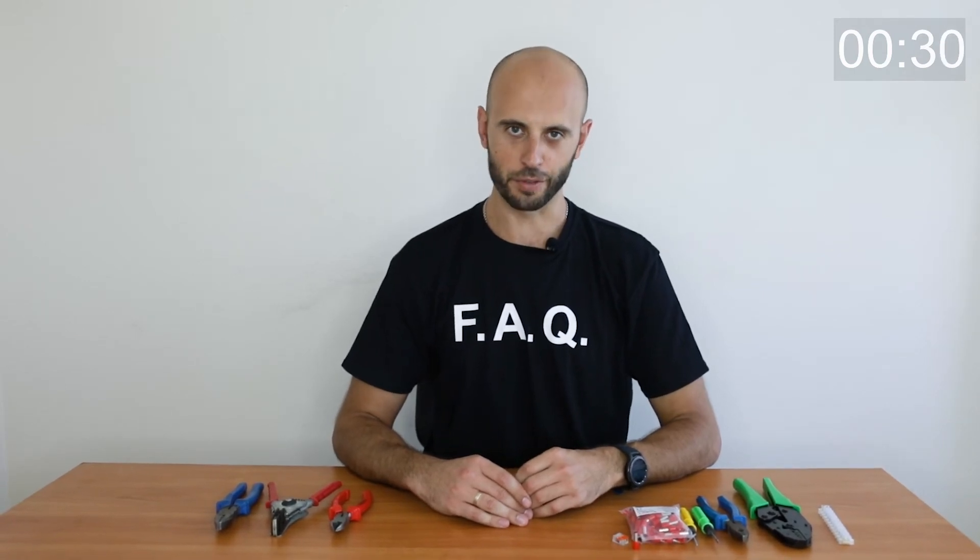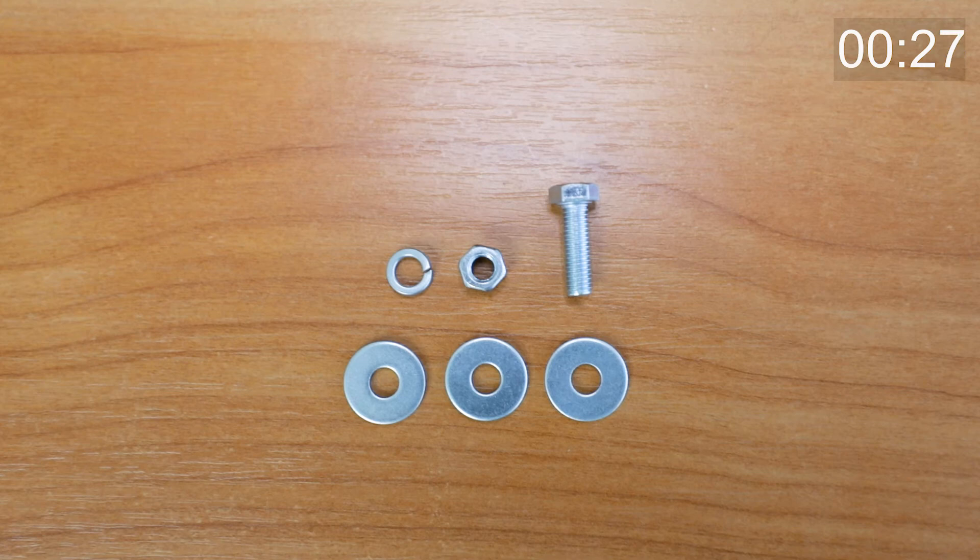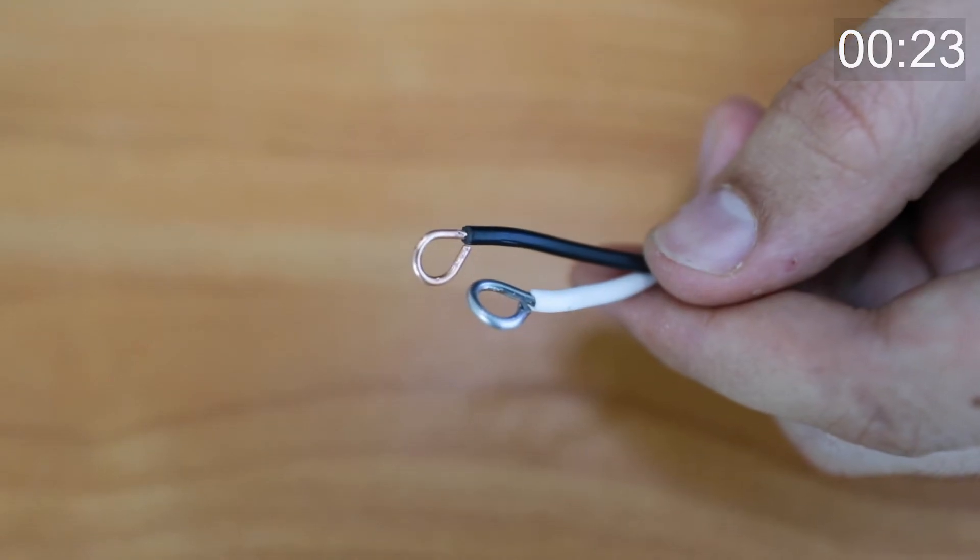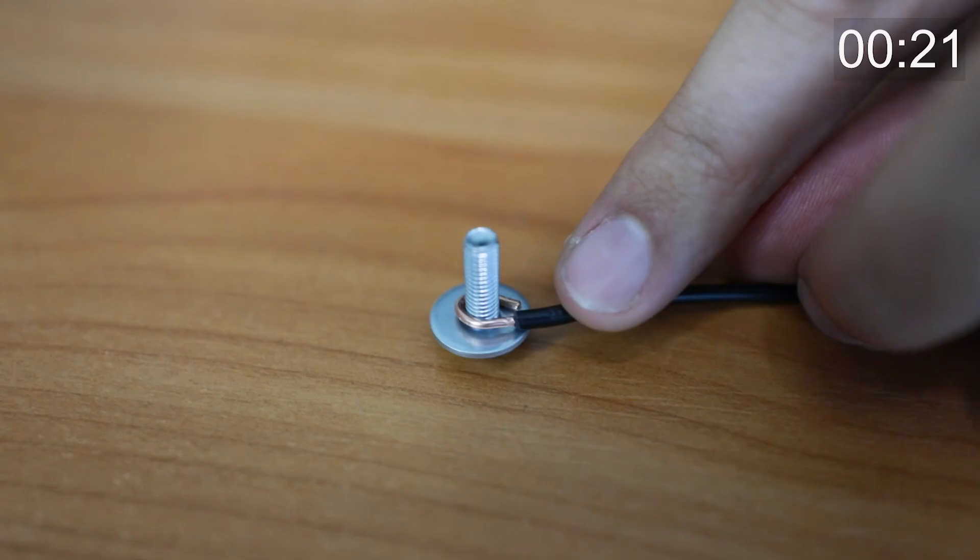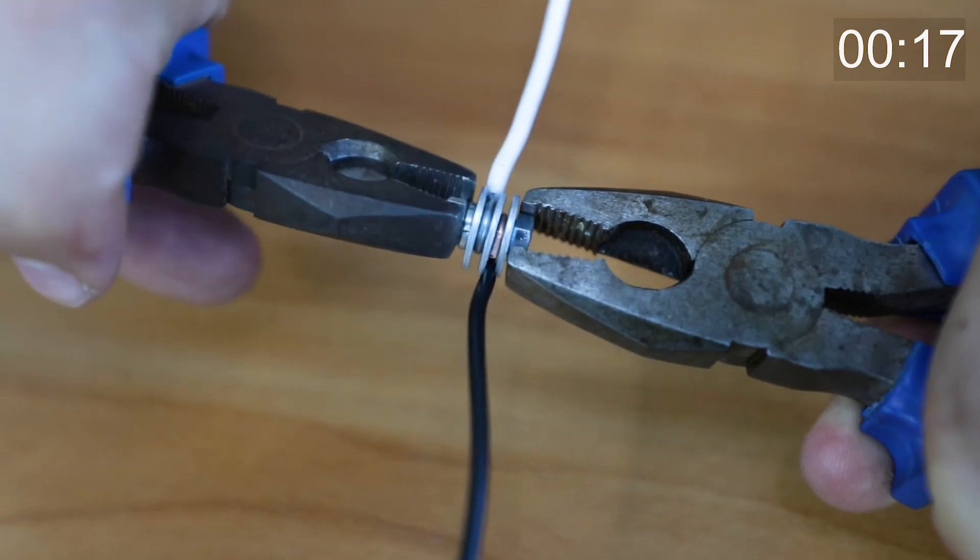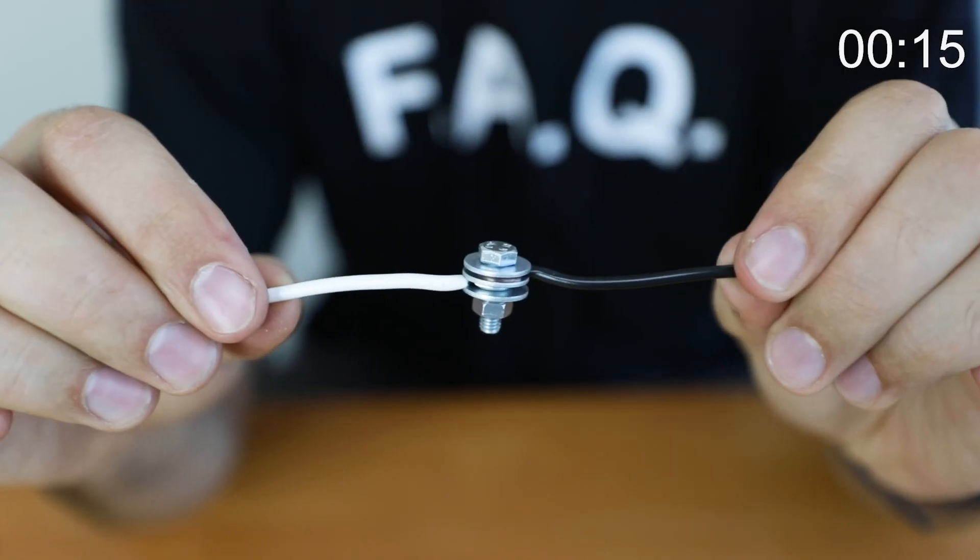For two wires we need one bolt, three washers, one spring washer, and one nut. No contact between the wires means no problems.